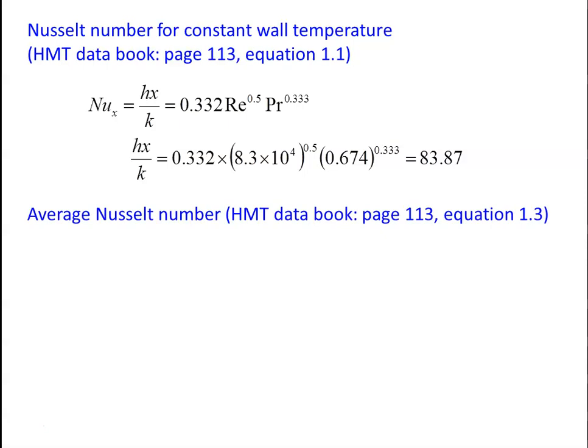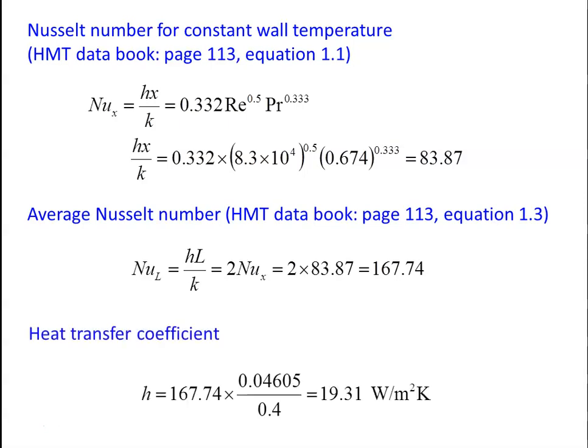Average Nusselt number from page 113, equation 1.3: Nu_avg = 2 × Nu_L = 2 × 83.87 = 167.74. Average heat transfer coefficient h = Nu_avg × k / L = 167.74 × 0.04605 / 0.4 = 19.31 W/m²·K.